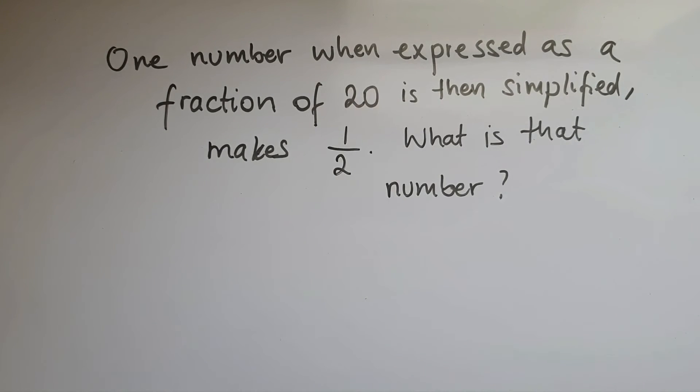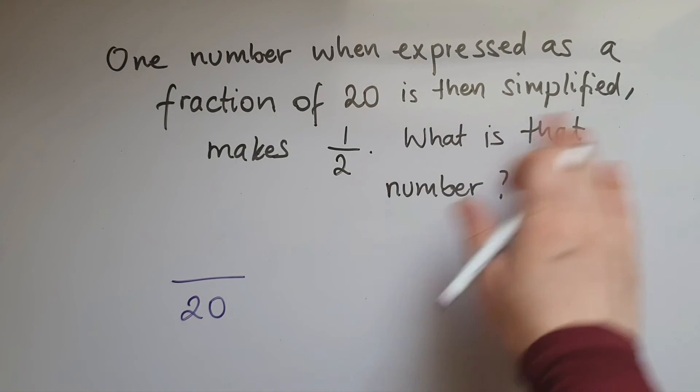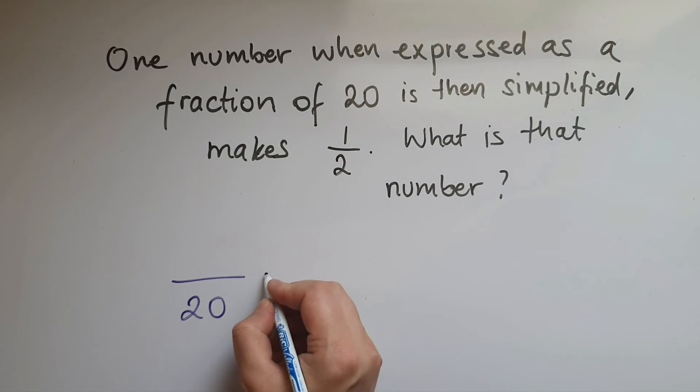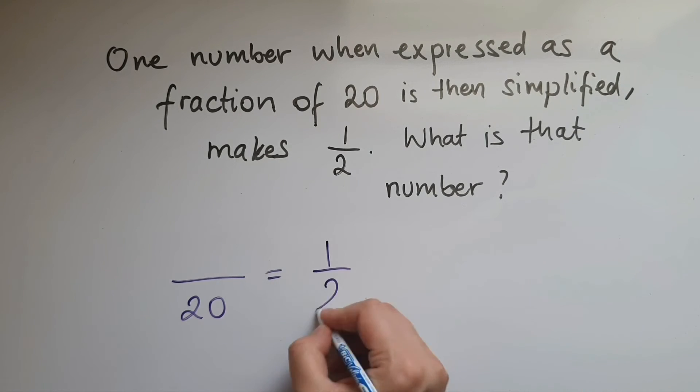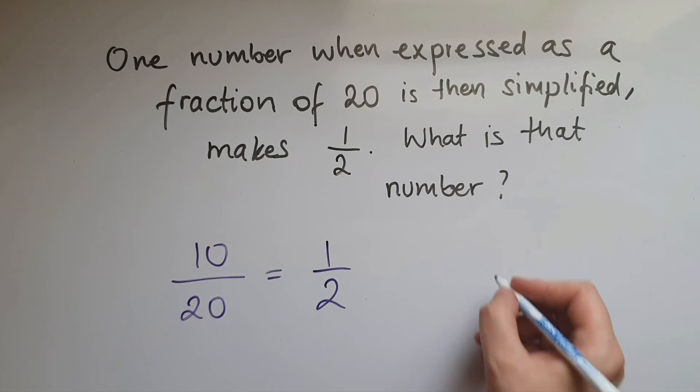Now we have a question which is slightly more complex. It says one number when expressed as a fraction of 20—so we've got to imagine that number out of 20—is then simplified, makes 1/2. What is that number? So basically we've got to look at half of 20, which is 10, and that's the missing number.